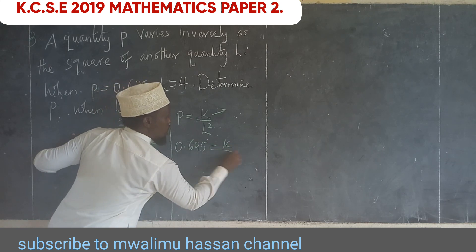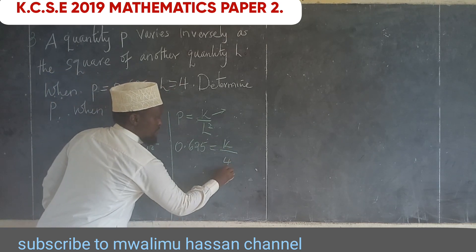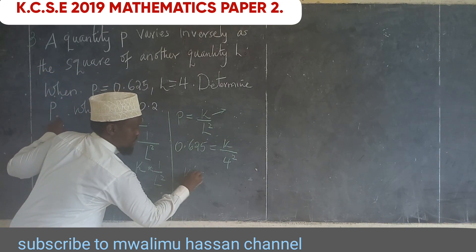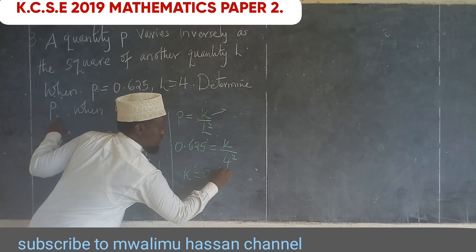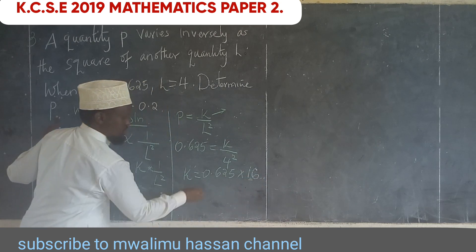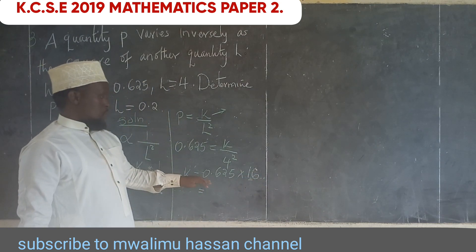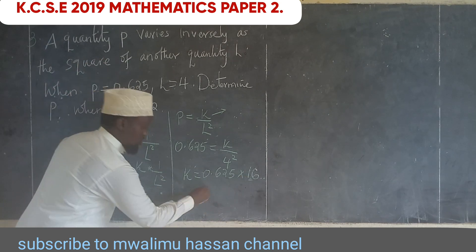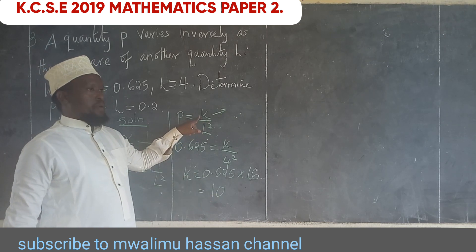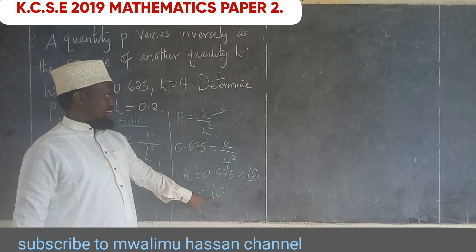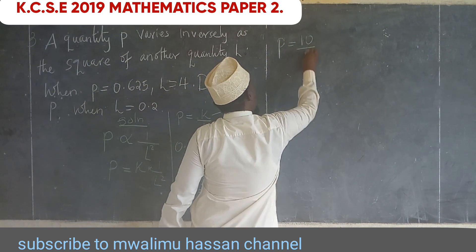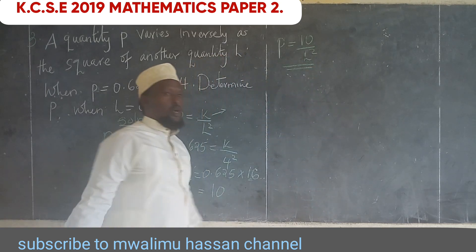We are given P = 0.625 and N = 4, so 0.625 = K/4². Therefore K = 0.625 times 16, which equals 10. Once we find K, we replace it in the equation, so P = 10/N².